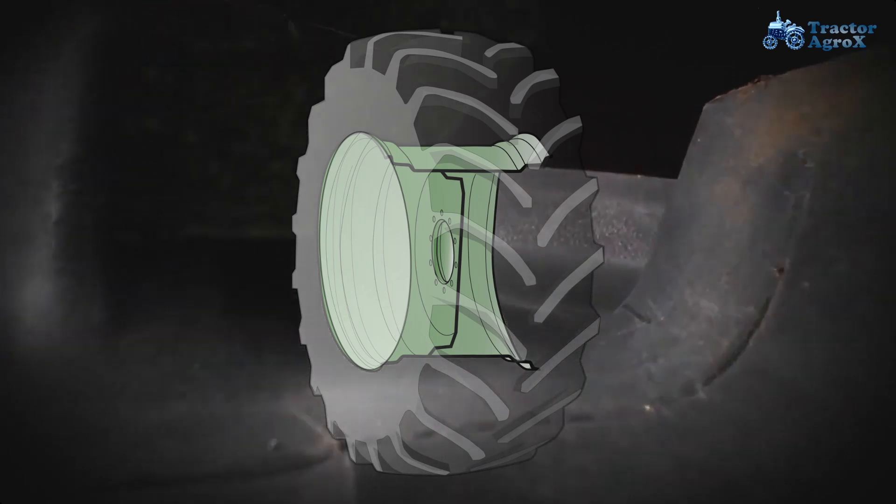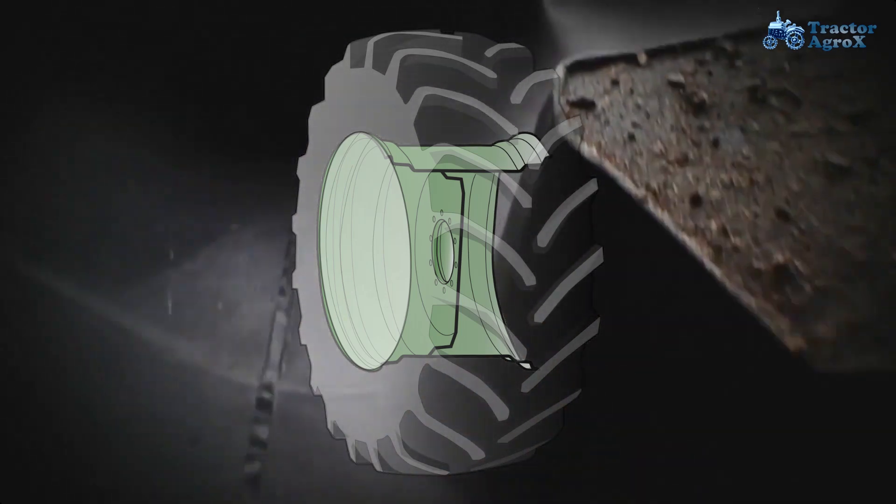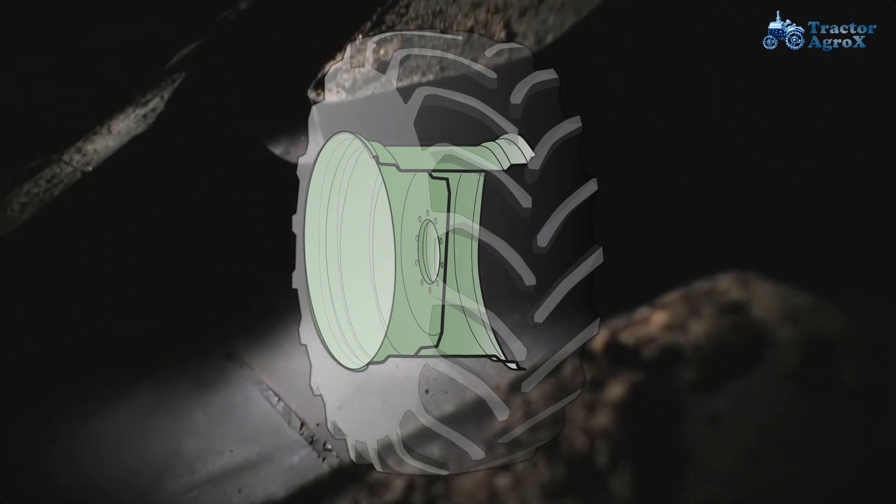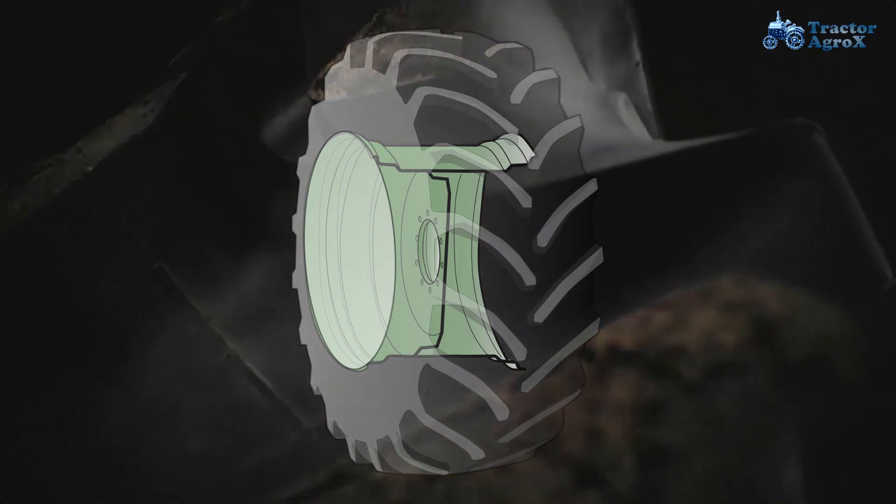Using a wider rim results in flattening of the tread face. This effect may improve traction in some looser soil conditions.